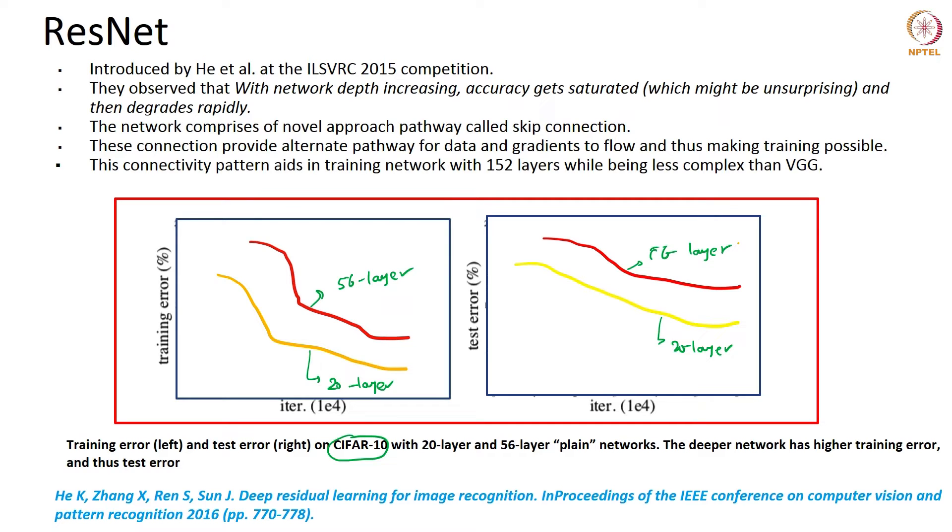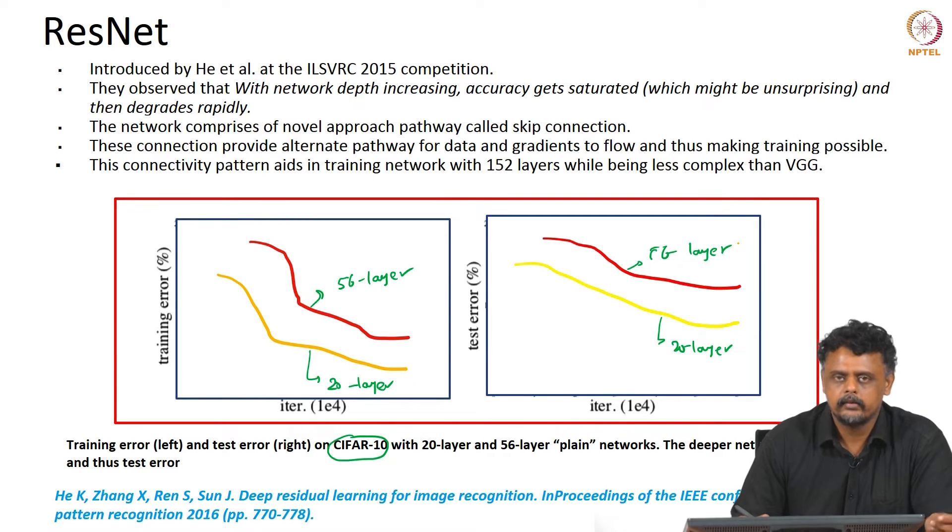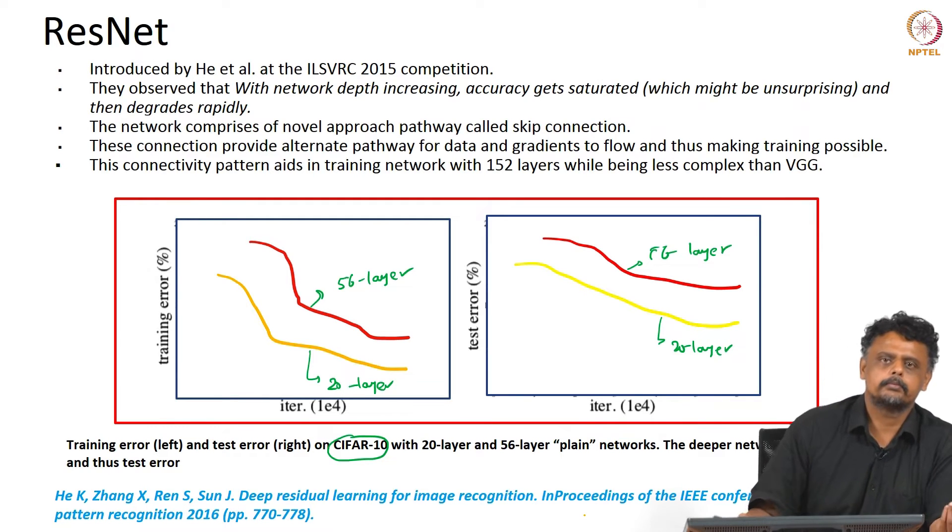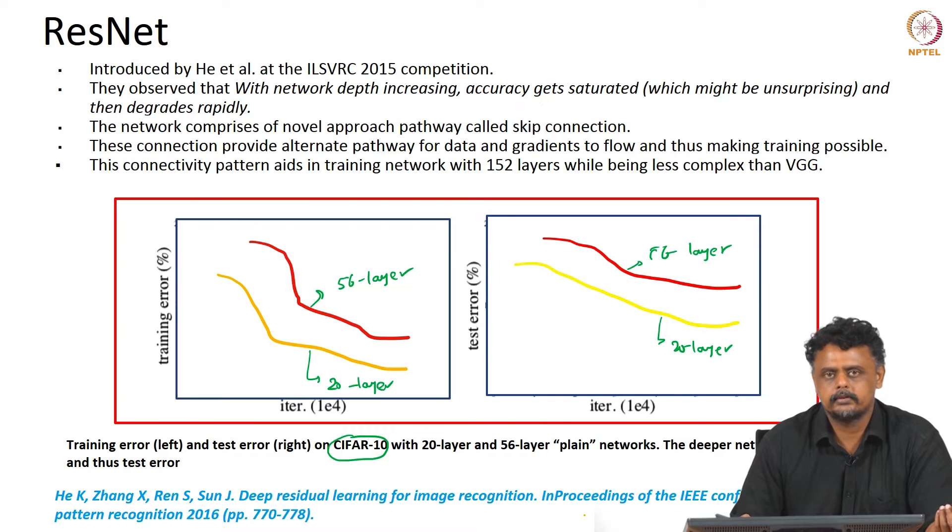The problem with this picture is that the general wisdom says that as you go deeper your training and test error should improve because your representations are supposed to become better and you need better separability among classes and so forth because the non-linearities also increase as you go deeper. However practically this seems to be a problem because generally there does not seem to work that way. As you go deeper there are issues with the test training and testing error. So now what is the reason behind this? The reason behind this is that there is a problem with the gradient flow. The weights, as you go deeper and deeper, vanishing gradient problem is there. Vanishing or exploding gradient problems is there. So that is not alleviated and so it is an optimization problem basically. As you go deeper, optimizing a larger and deeper network becomes harder.